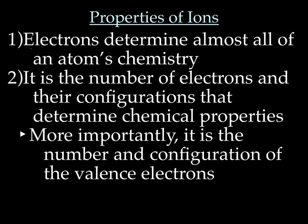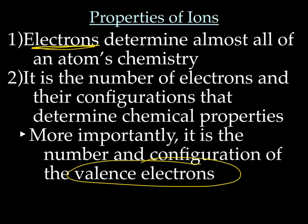Now let's talk about the properties of an ion. Electrons determine most of an atom's chemistry. Out of the three subatomic particles — protons, neutrons, and electrons — electrons are our favorite because they determine almost all of an atom's chemistry. The behavior of an atom is based on its electrons — specifically the number of electrons and their configuration. It's actually the valence electrons, the guys in the outermost energy level, that are really important.